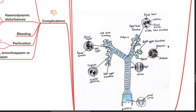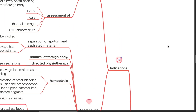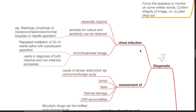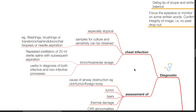Fiber optic bronchoscopy indications — diagnostic and therapeutic. Diagnostic indications include assessment of airway obstruction by a clogged tumor or foreign body, tumors, tears, thermal damage, and chest X-ray abnormalities. For chest infection, especially atypical, samples for culture and sensitivity can be obtained by washings, brushings, transbronchial or endobronchial biopsies, or needle aspiration. Bronchoalveolar lavage involves repeated instillation of 20 mL of sterile saline with subsequent aspiration, and is useful in diagnosis of both infective and non-infective processes.